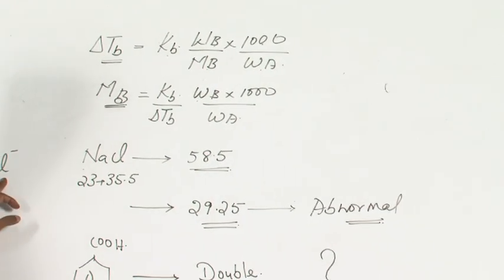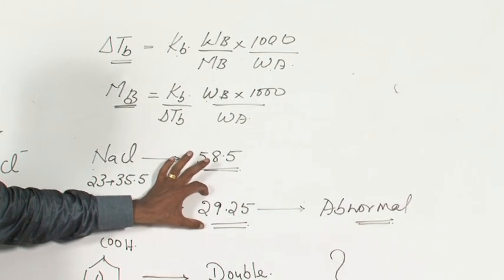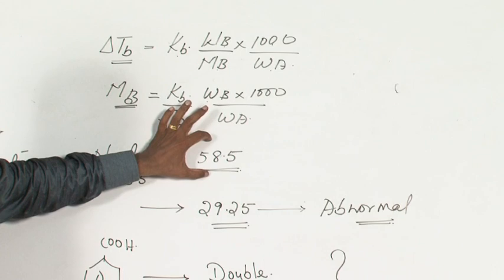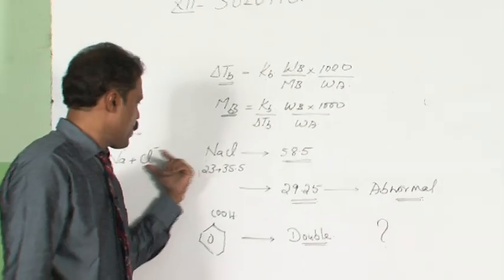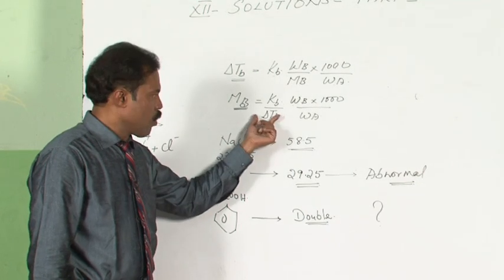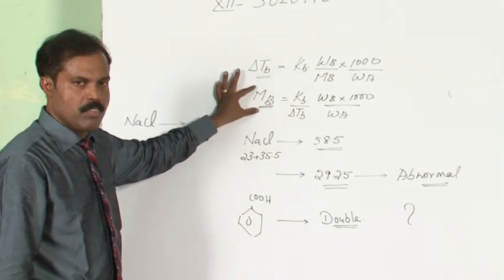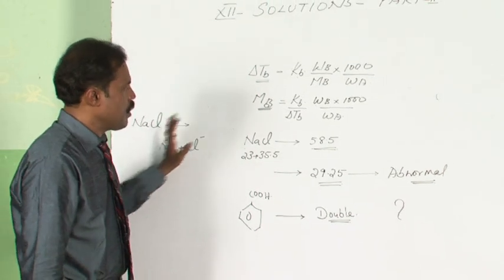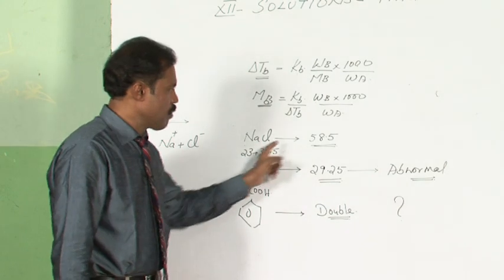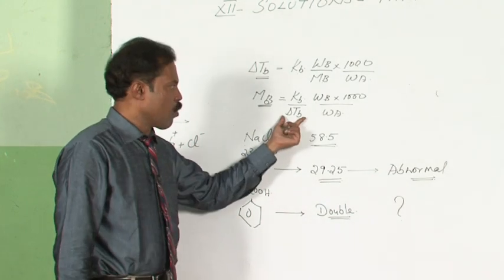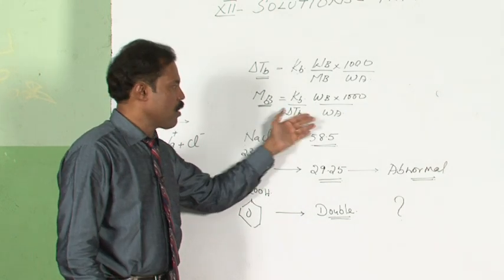Wherever there is dissociation, the calculated molecular weight will be less than the actual molecular weight. As dissociation happens, the number of particles increases, colligative property increases, and molecular weight decreases. In the case of sodium chloride, it is exactly half because the number of particles gets doubled, so the colligative property gets doubled and molecular weight gets halved.